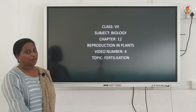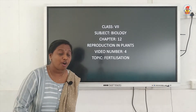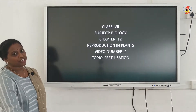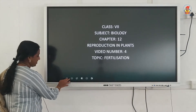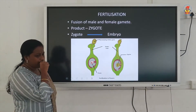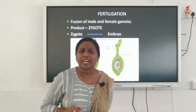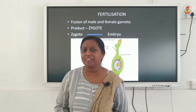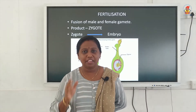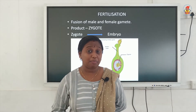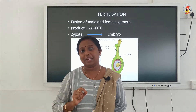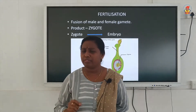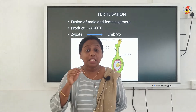Hi kids, today we will be seeing the last video of Chapter 12 - Reproduction in Plants, and today we will be dealing with the topic fertilization. Now remember what you studied in the third video. You remember the different parts of a flower — what is the male reproductive part of a flower called? Yes, it is the stamen. The female reproductive part of a flower is called the pistil.